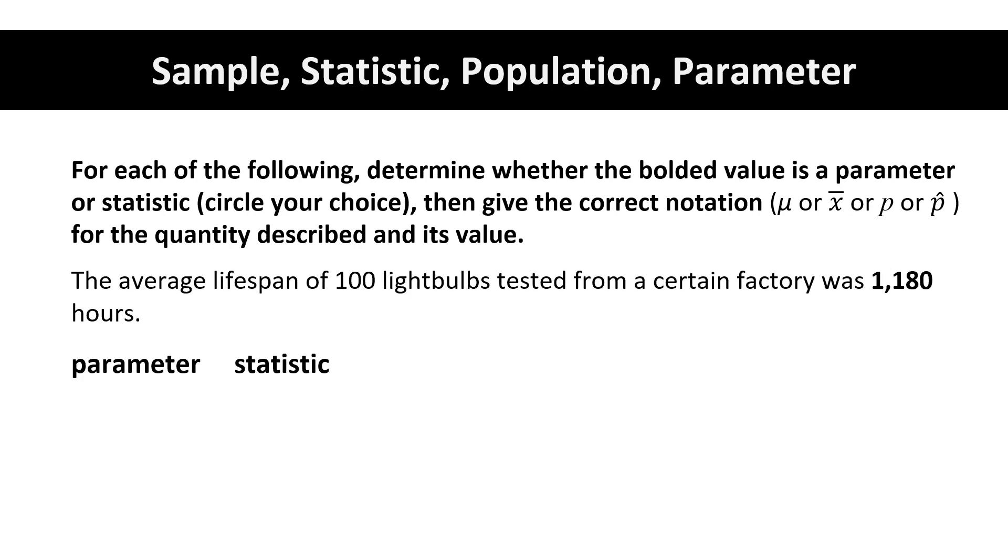The average lifespan of 100 lightbulbs tested from a certain factory was 1180 hours. Because we are taking a sample of 100 lightbulbs from the factory, this is a statistic. And it is an average, therefore it's a mean. We use x-bar. X-bar equals 1180 hours.